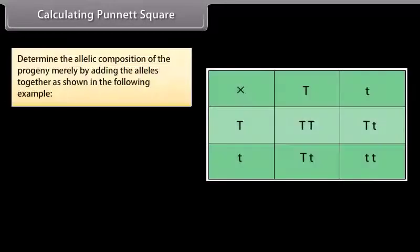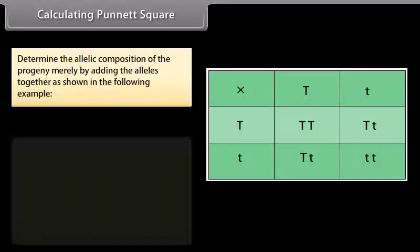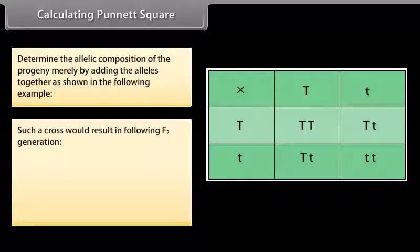Calculating Punnett square. Determine the allelic composition of the progeny merely by adding the alleles together as shown in the following example. Such a cross would result in following F2 generation.